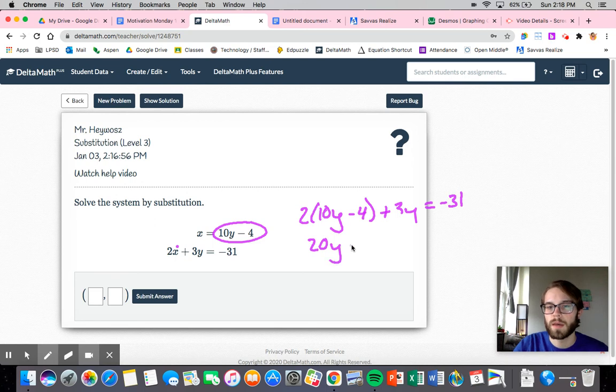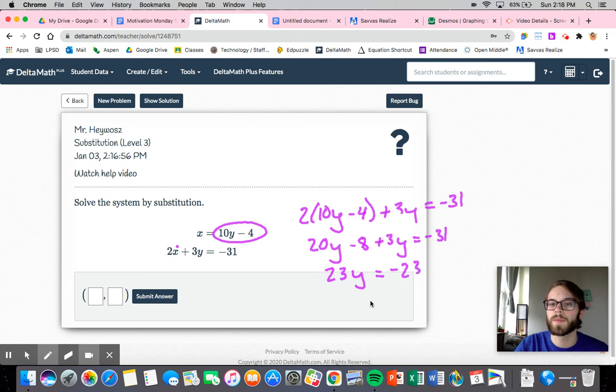All right. So this would be 20y minus 8 plus 3y equals negative 31. Okay. So that would be 23y equals, when I add the 8 to that side, would be negative 23. So y is going to be equal to negative 1.